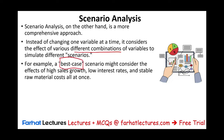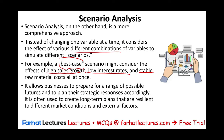For example, we can ask: what's the best-case scenario? Consider the effect of high sales growth, low interest rates, and stable raw material costs all at once. Sales goes up, interest expense goes down, raw material price stays flat — that's best-case. This allows the company to prepare a range of possible future plans and respond accordingly. We can do best-case, worst-case, and something in between. This is often used to create long-term plans resilient to different market conditions and external factors, adjusting throughout the way.